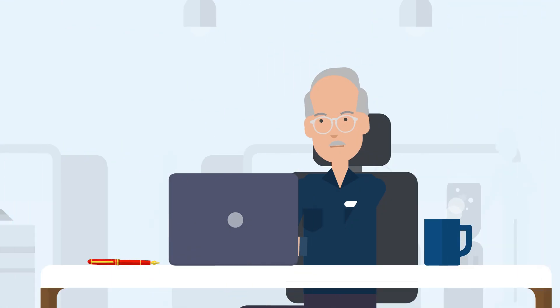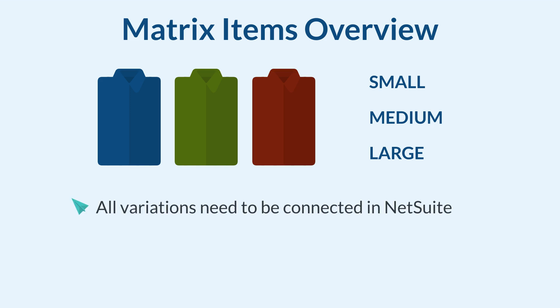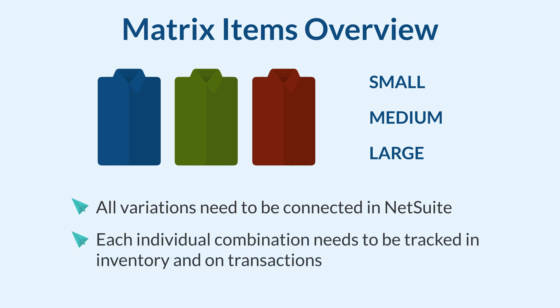A common use case for Matrix Items would be with clothing. Suppose you sell a certain shirt style in three different colors and three different sizes. A customer could buy this shirt in any of the colors and any of the sizes. It's the same shirt, so you'll want to make sure all your inventory is connected in NetSuite, but you also need a way to track your inventory of the different possible combinations.